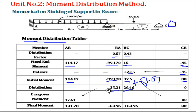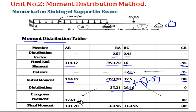The distributed moments are carried over to the far ends. From B to A, the far end is fixed, so carry-over is allowed and equals half: 35.21 divided by 2 = 17.61. From B to C, the far end is a simple support and the beam is not continuous, so carry-over is not allowed — it is zero.